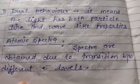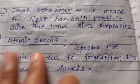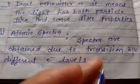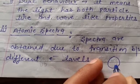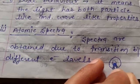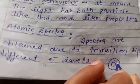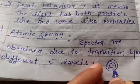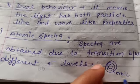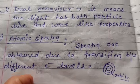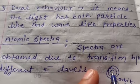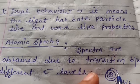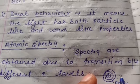Atomic spectra: when Rutherford made his model, he proposed that the atom is a hollow sphere with a positive charge nucleus, and electrons circulate outside in paths called orbits. This means that in an atom many orbitals are present, many energy levels are present.